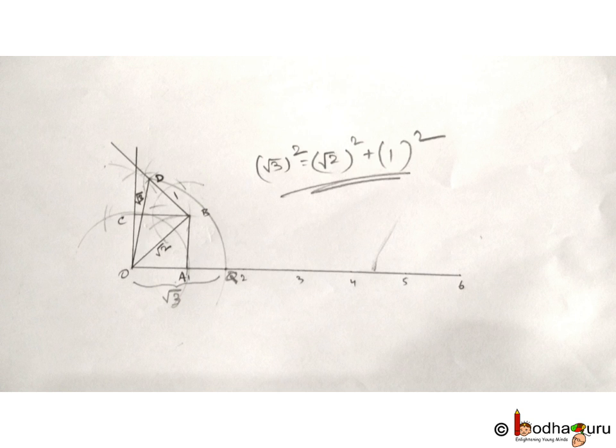We took help of Pythagorean theorem. For square root of 3, we draw a right angle triangle with square root of 2 as the base and 1 as the height. Then the hypotenuse will be square root of 3.